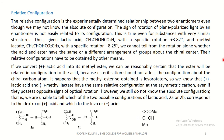Consider lactic acid with a specific rotation of plus 3.82 degrees, and methyl lactate, a derivative of lactic acid, which has a specific rotation of minus 8.25 degrees. We cannot tell from the rotation alone whether the acid and ester have the same or different arrangement of groups about the chiral center. Their relative configurations have to be obtained by other means.